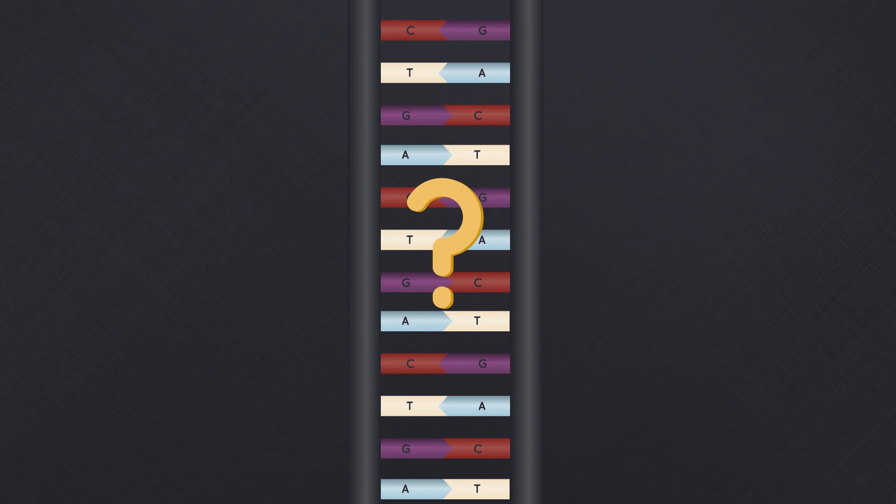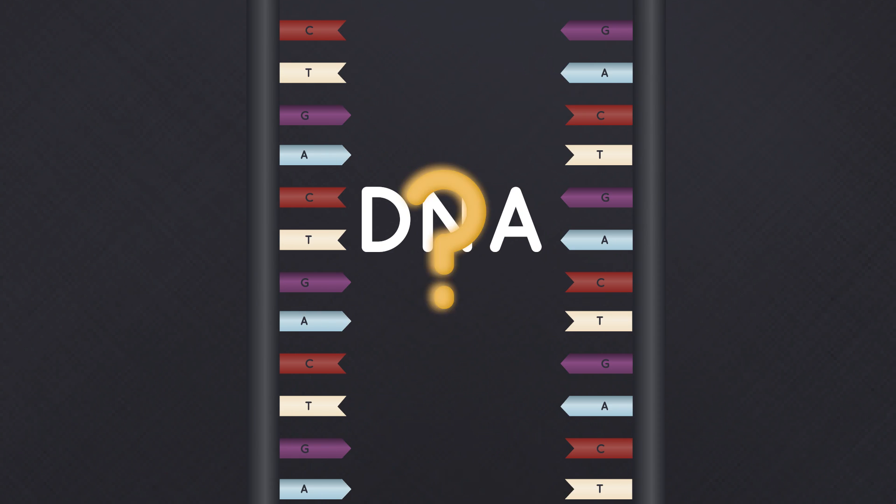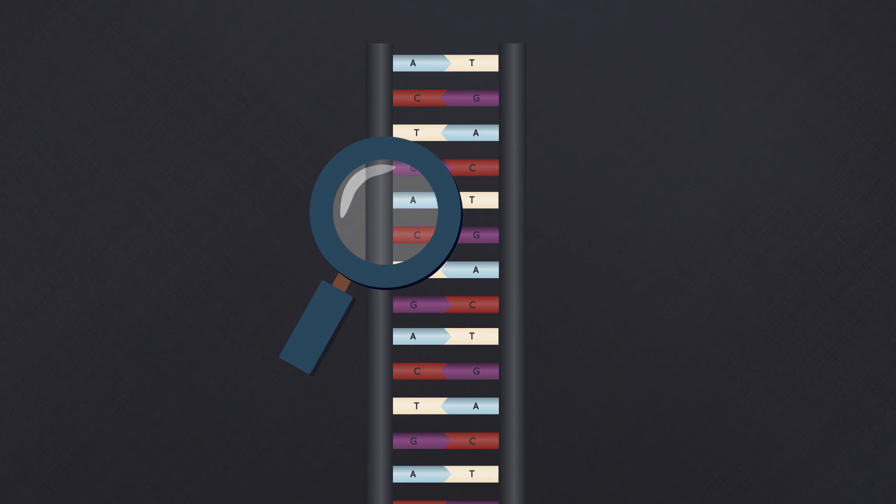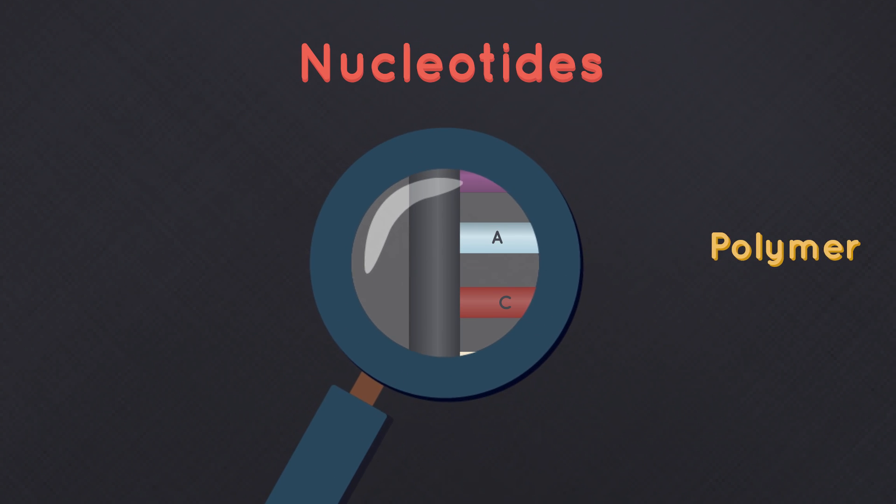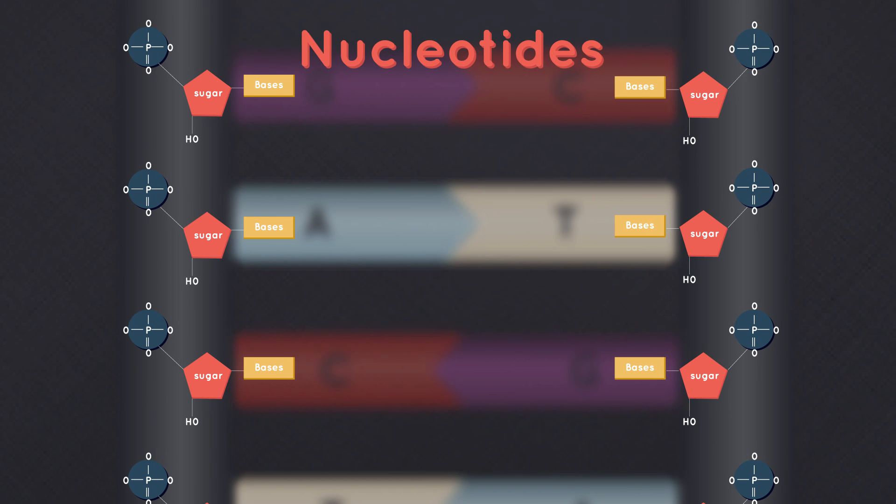But what is DNA made up of? DNA is made up of lots of molecules called nucleotides. DNA is a polymer because it is a large molecule composed of repeated subunits, the nucleotides.